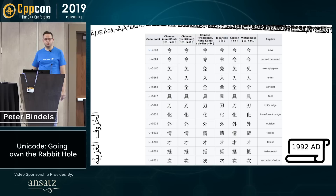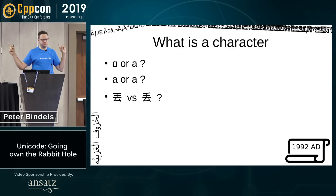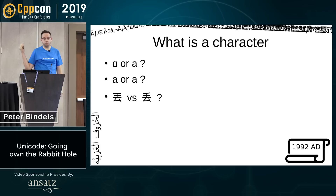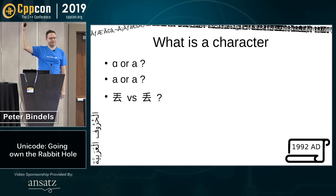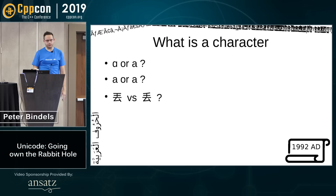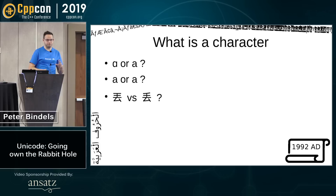What actually is a character? Looking at two uppercase A's in different fonts — Unicode says they're the same character. But looking at two glyphs that appear identical, one might be a Cyrillic letter and one a Latin letter — the same glyph but different grapheme representations. The last example is simplified Chinese versus traditional Chinese — sort of the same grapheme but not quite, sometimes encoded differently and sometimes the same. This is one of the things that complicates character handling.